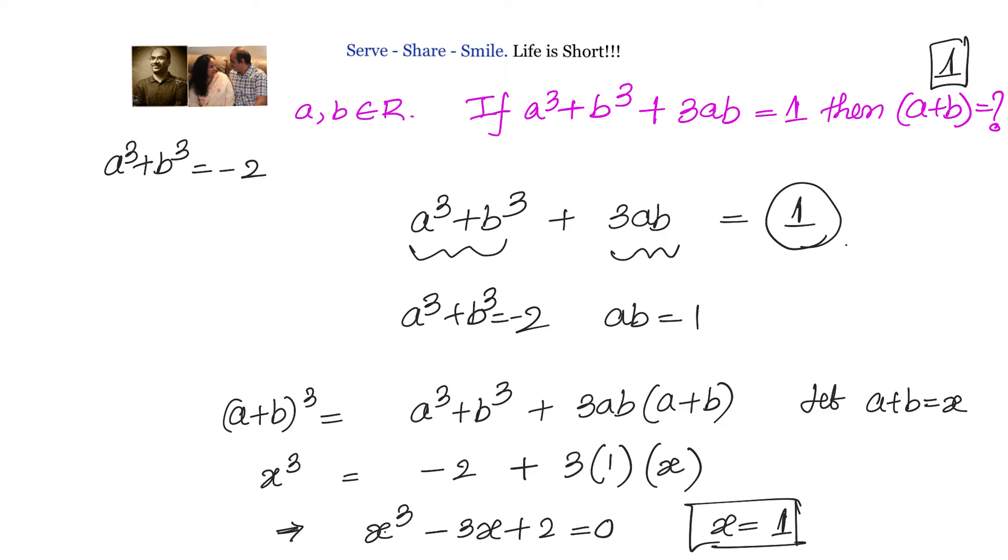Since we know a + b = 1, we can easily get a² + b² = -1, and we can also get a - b = √3i. When we solve these two equations, we get a = (1 + √3i)/2.